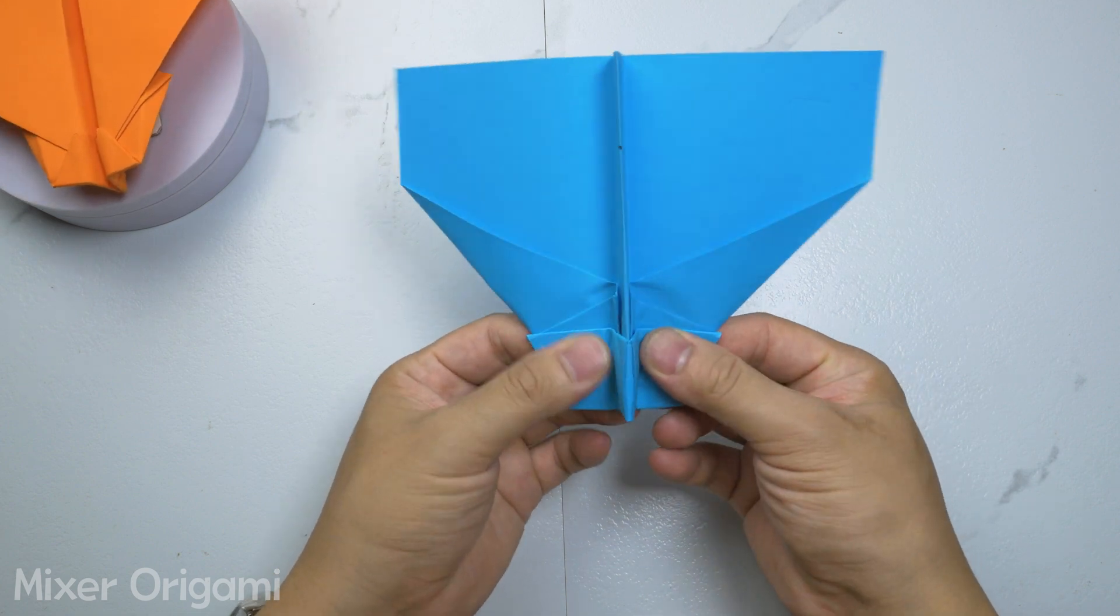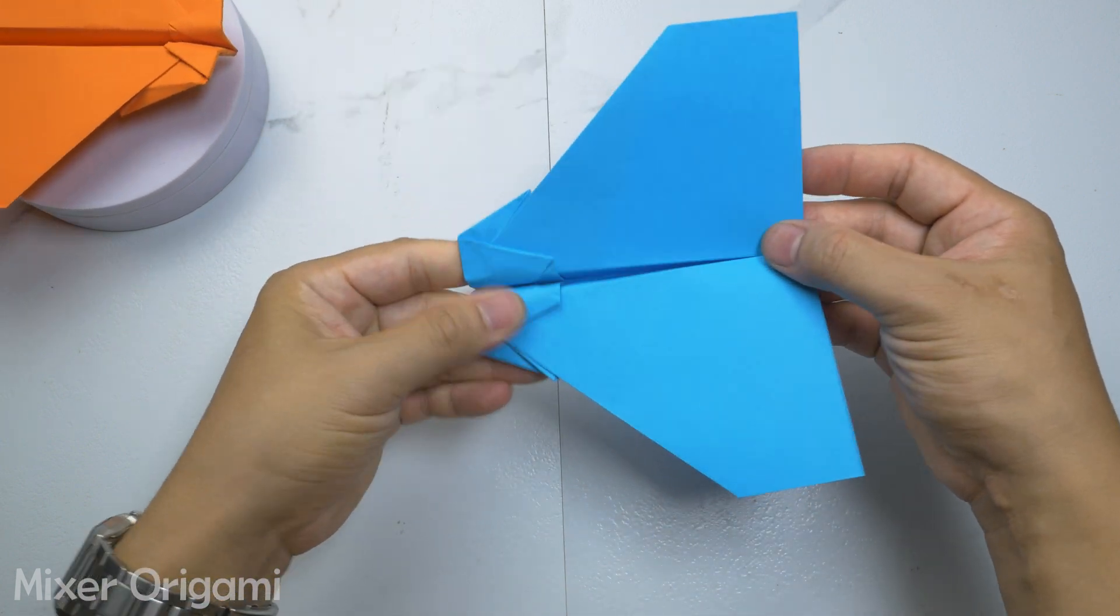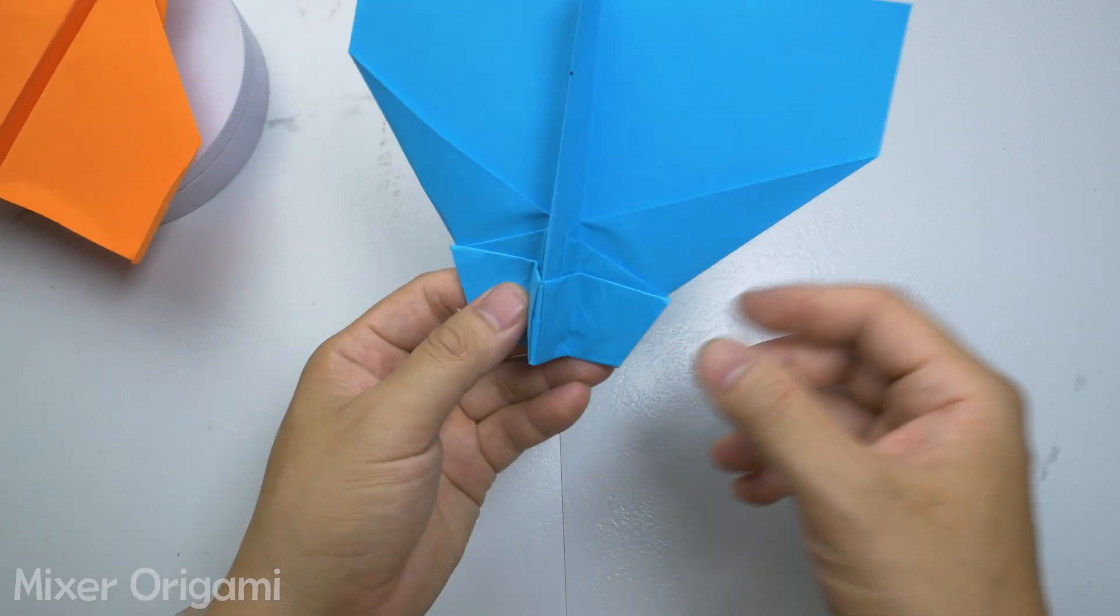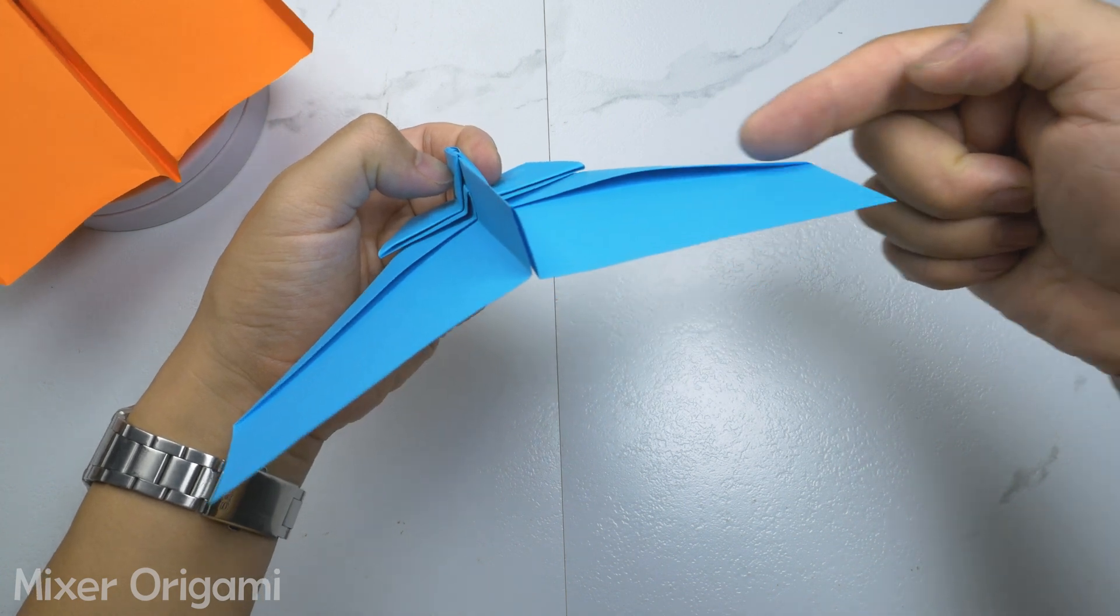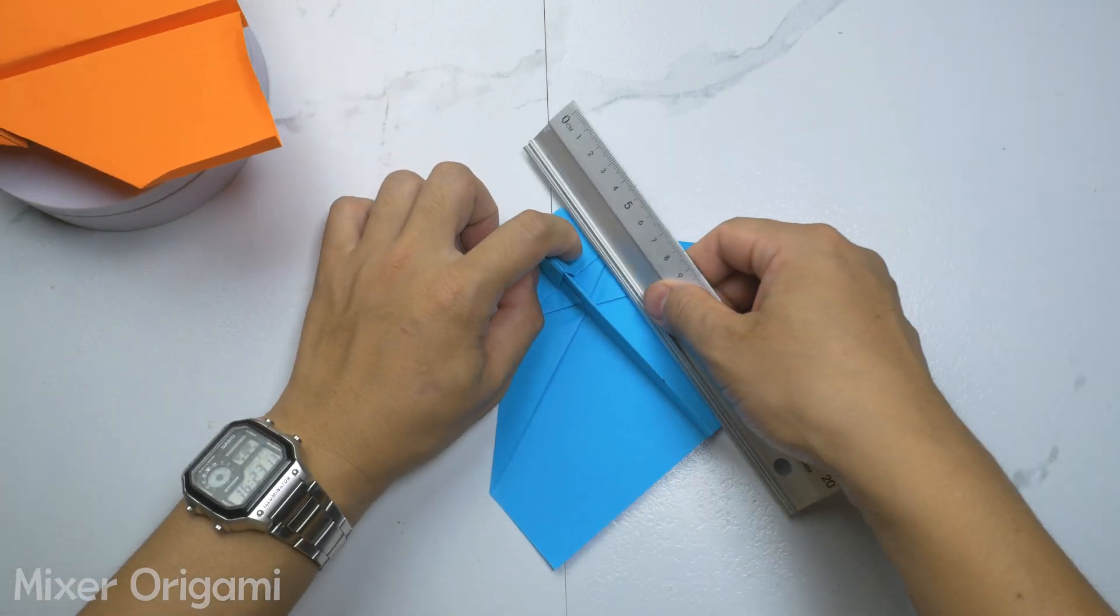The last thing is to use your finger to bend the tail of the airplane at the marked position. A complete paper airplane is born. Please pay attention to fold and flatten the paper to achieve optimal results.